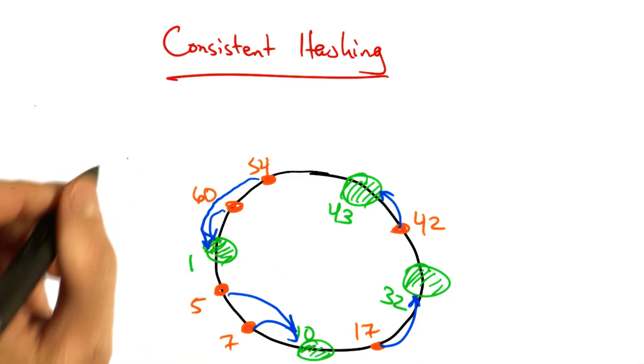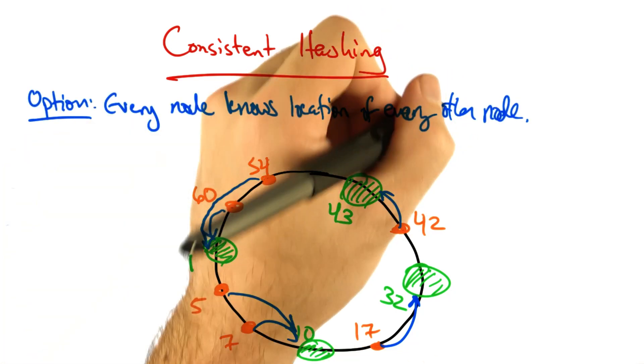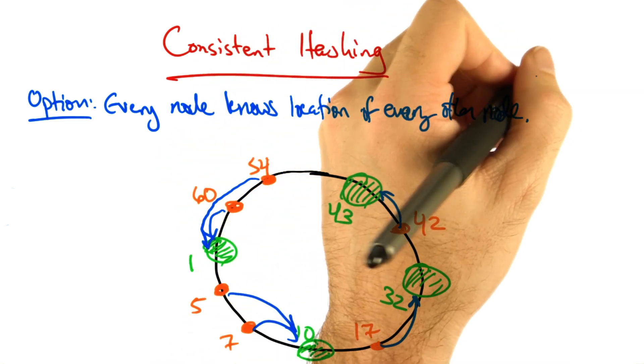Let's talk a little bit about how to implement consistent hashing. One option is for every node to know the location of every other node.